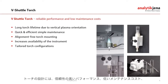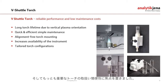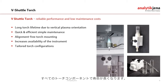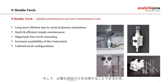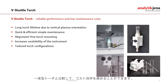When we designed the torch for our instruments, we mainly focused on reliable performance, low maintenance costs, and most importantly easy torch handling. Our V-Shuttle torch comes with a vertical orientation which offers high matrix tolerance and results in a long lifetime of all torch components. The V-Shuttle torch is easy to access and fully demountable, which allows cleaning of all parts in a convenient way. Another advantage is that you only need to replace the parts which are damaged, rather than discarding all glass parts, making it more cost effective compared to so-called one-piece torches.